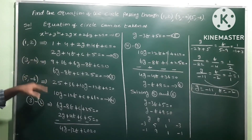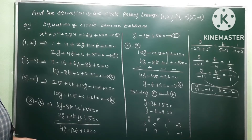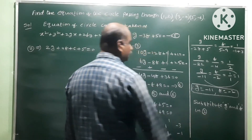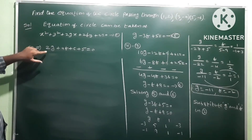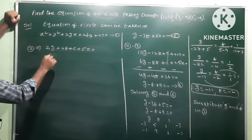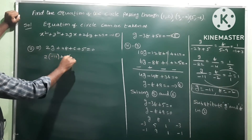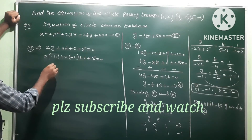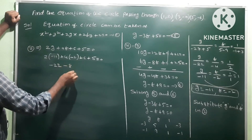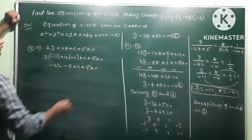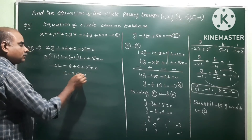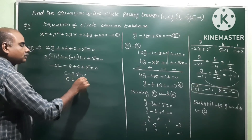Now substitute g = -11 and f = -2 into equation 2: 2g + 4f + c + 5 = 0. So 2(-11) + 4(-2) + c + 5 = 0, giving -22 - 8 + c + 5 = 0, so -25 + c = 0. Therefore c = 25.